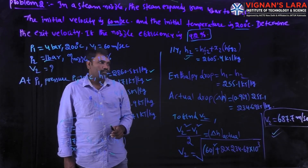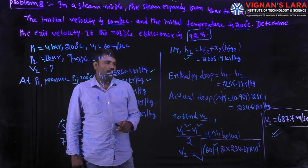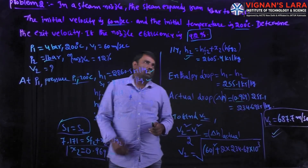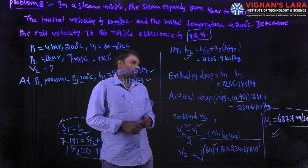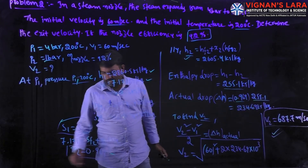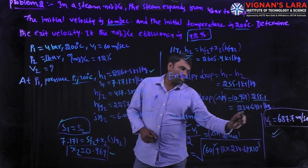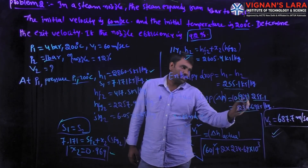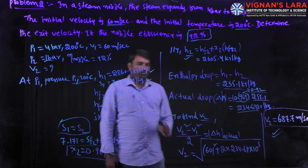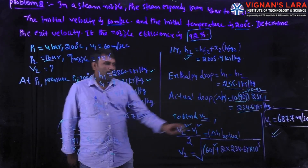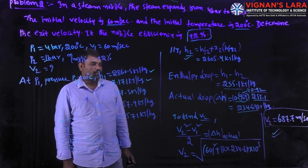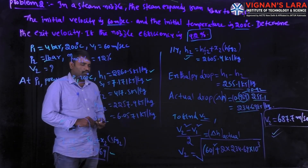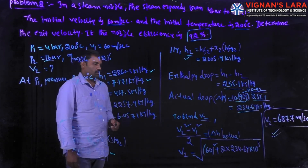After finding h2, the theoretical enthalpy drop is h1 minus h2, which can be easily calculated. The actual enthalpy drop is then found by multiplying the nozzle efficiency — 0.92 — by the theoretical enthalpy drop. So the actual enthalpy drop equals 0.92 times the theoretical value. After calculating the actual enthalpy drop, you can determine the actual exit velocity of the steam.